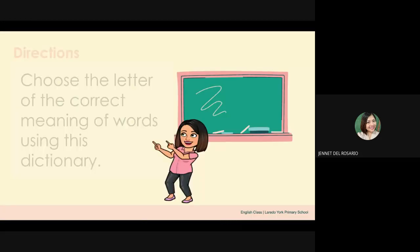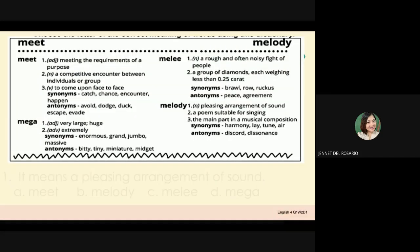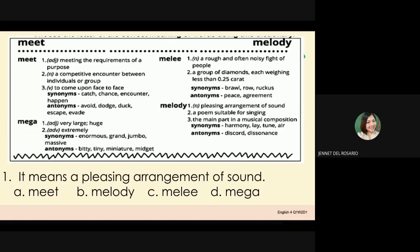Use the letter of the correct meaning of words using this dictionary. You can see that this is a page from a dictionary. Now, get your paper and a pen. You're going to write the letter of the correct answer. Number your paper 1 to 10. I want you to be honest with your answer. Later, we're going to check it.